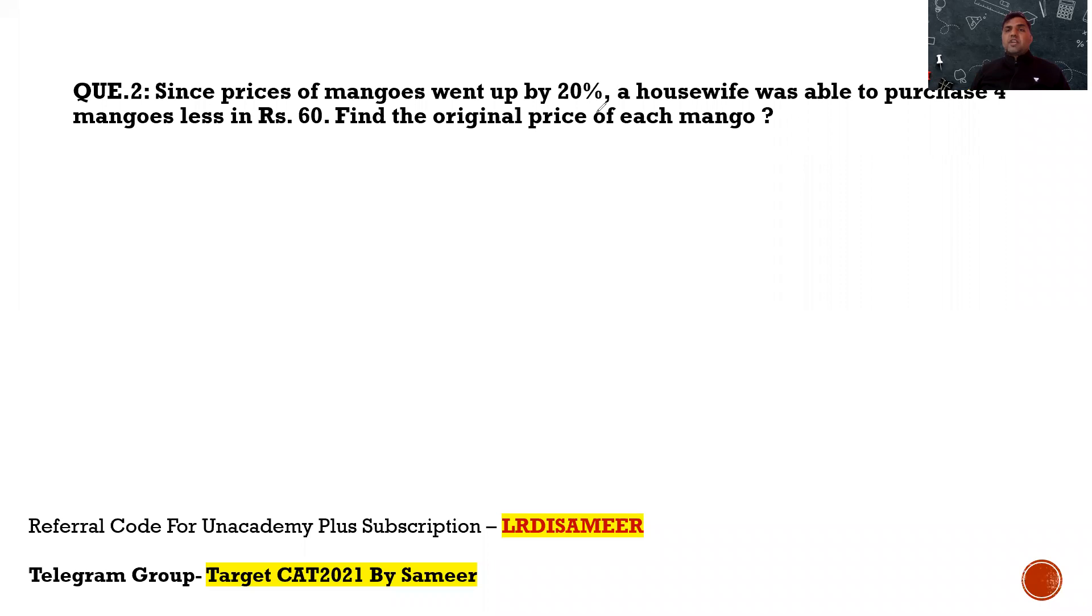Straight away, the method of solving this question is just understand the language here. You can solve this question very easily in a very simple way. Since the prices of the mangoes went up by 20 percent, a housewife was able to purchase 4 mangoes less for Rs. 60. See that the quantity which you were purchasing earlier at Rs. 60 now is 20 percent costlier. So, can I say the new price will be Rs. 72?